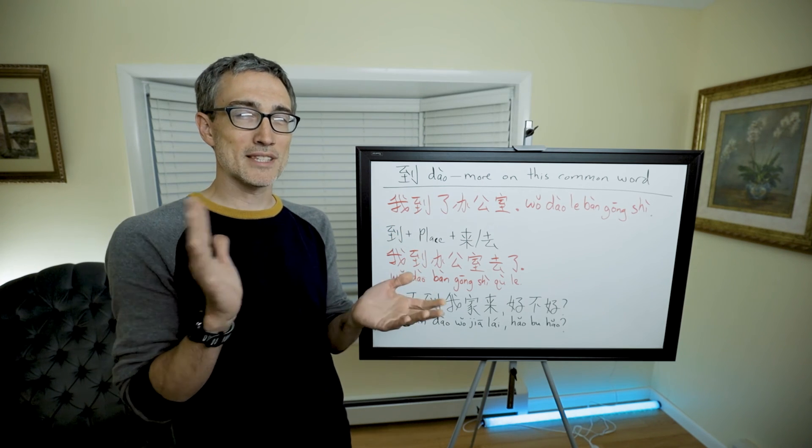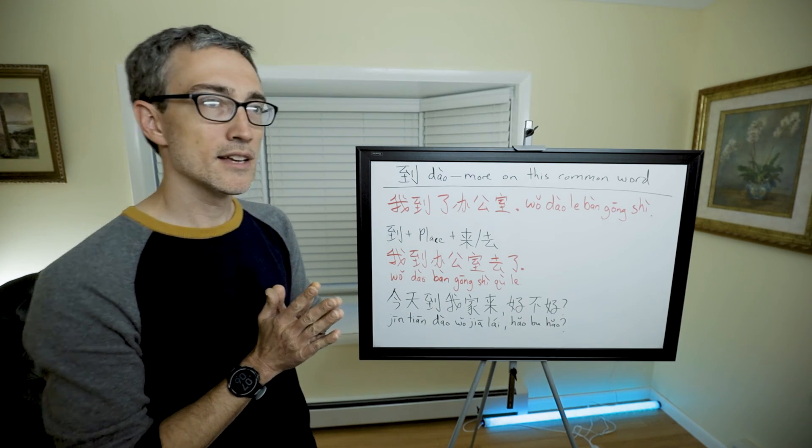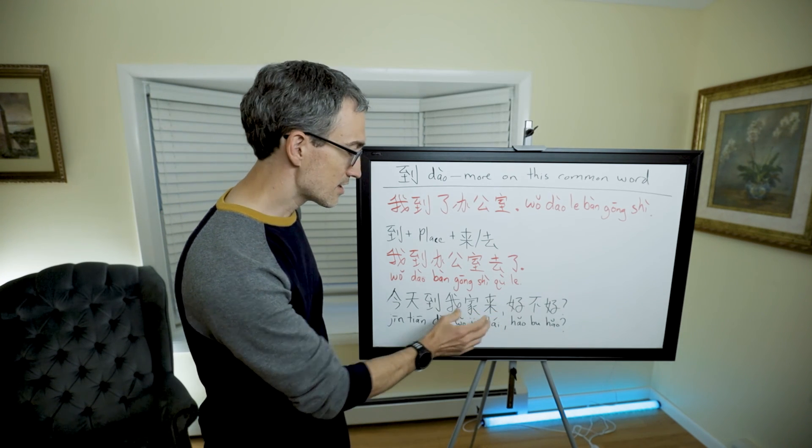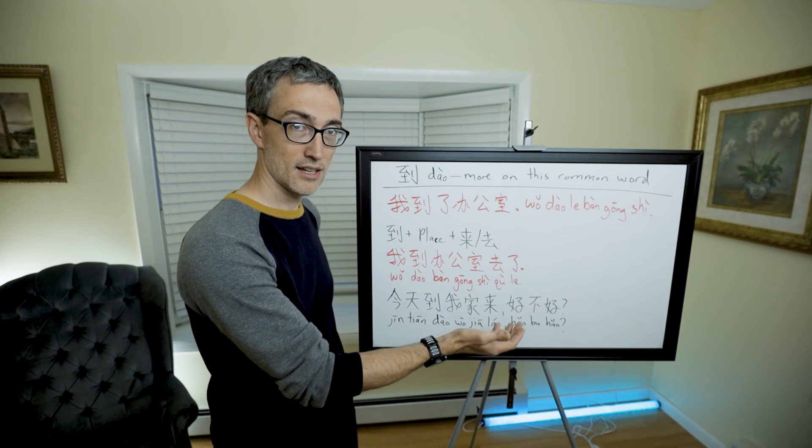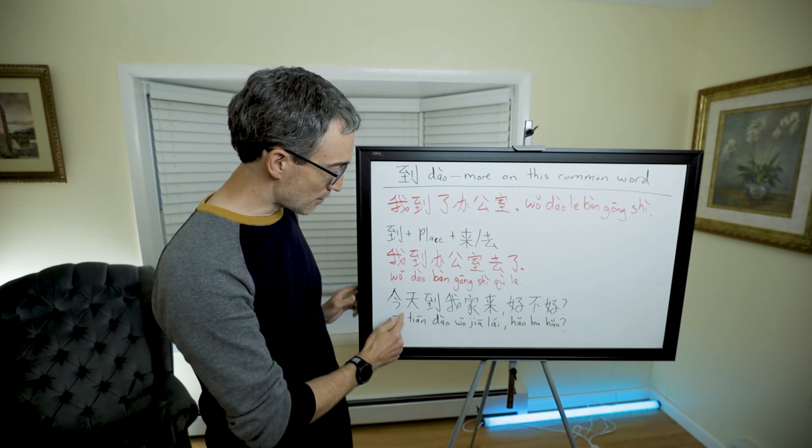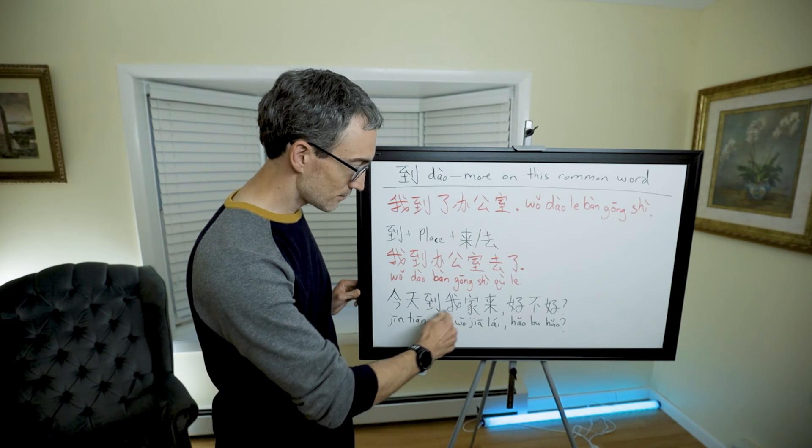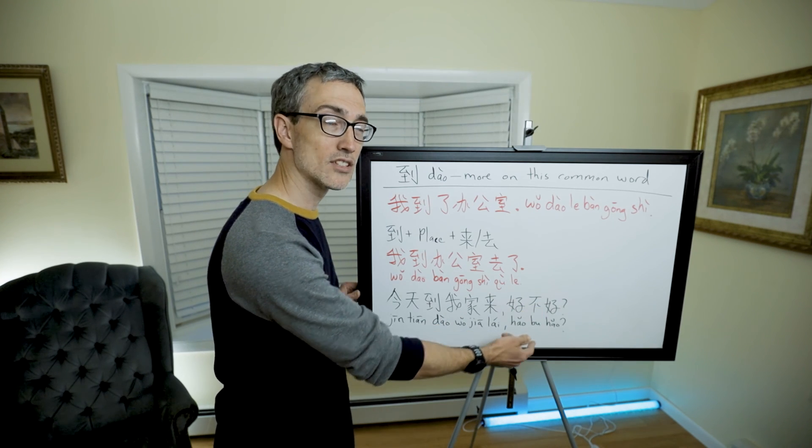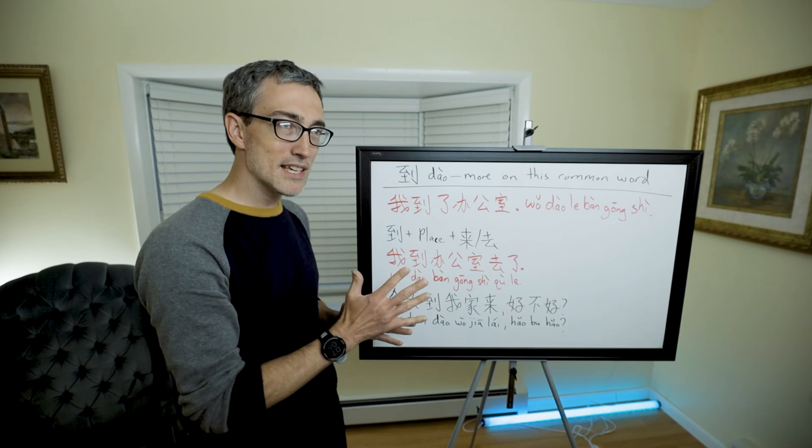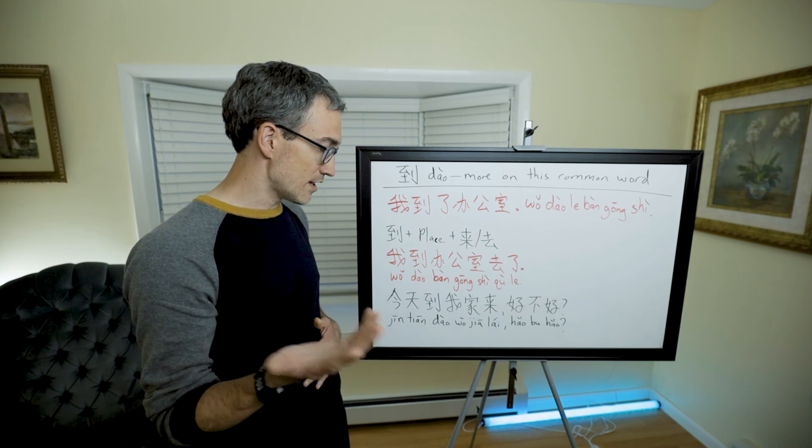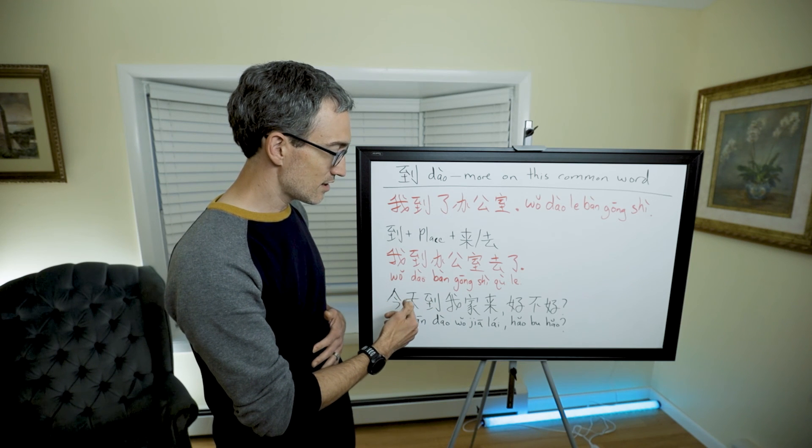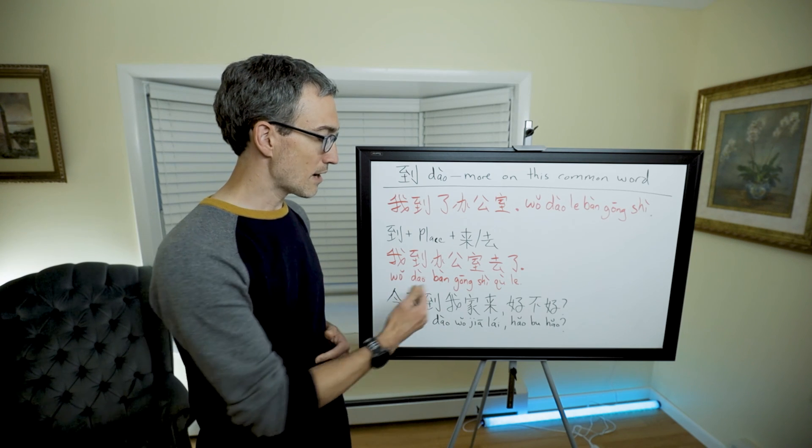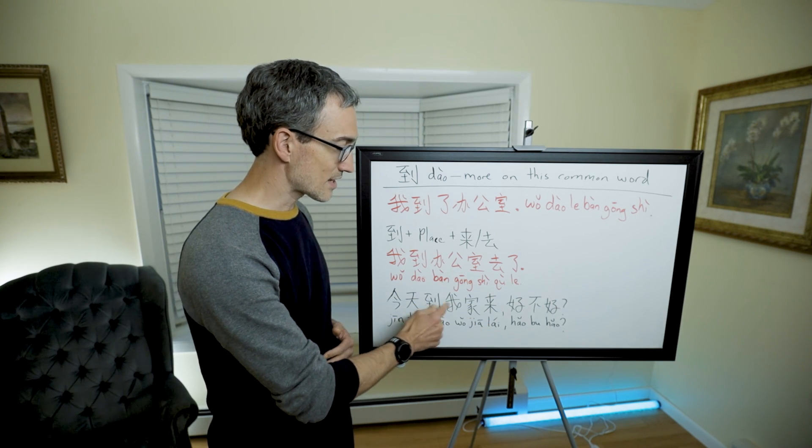However, it does lend itself especially well to talking about the purpose. For example, if I wanted to say come to my house to eat, 今天到我家来吃饭好不好. This kind of tells me the place, and then 来吃饭, to come to eat. I could say 今天来我家吃饭, there's nothing wrong with that.